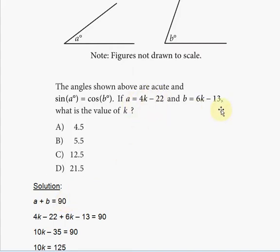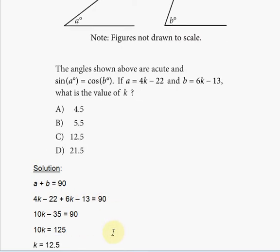If a plus b is equal to 90, that means we can substitute in the values for a and b into this equation. So we're going to have 4k minus 22 as the value for a and 6k minus 13 as the value for b. So we sum it up and we're going to have 4k minus 22 plus 6k minus 13 is equal to 90, and then we simply solve for k.